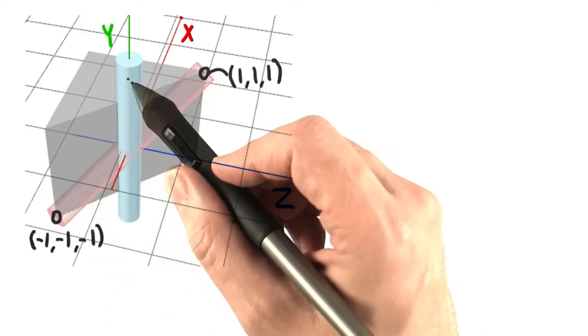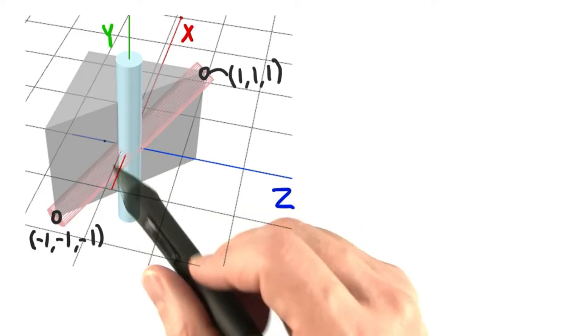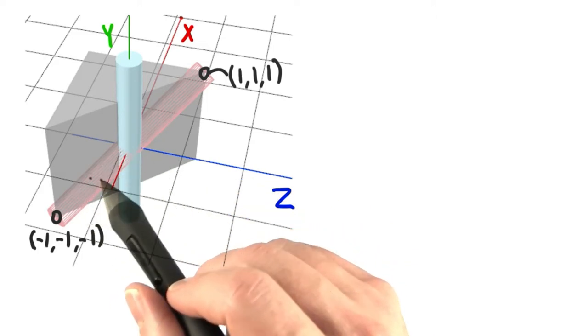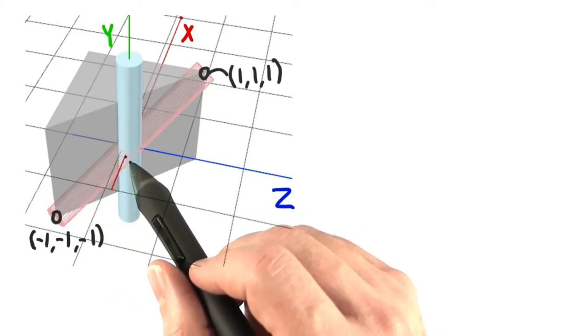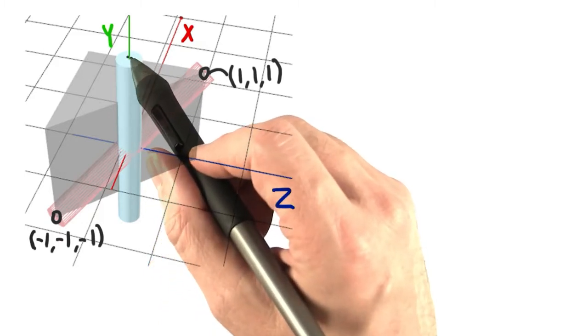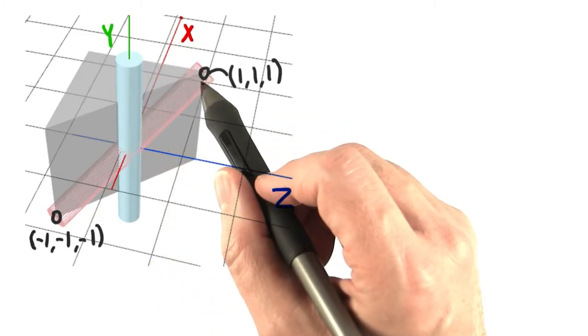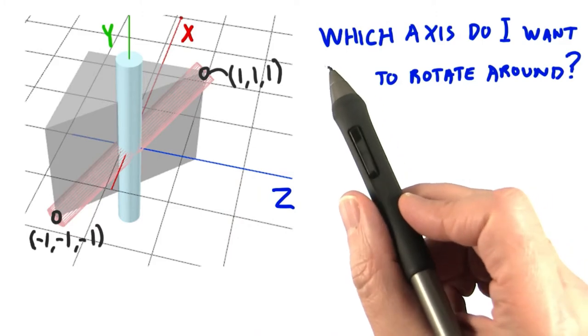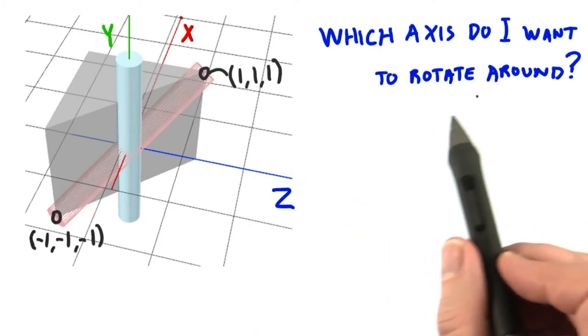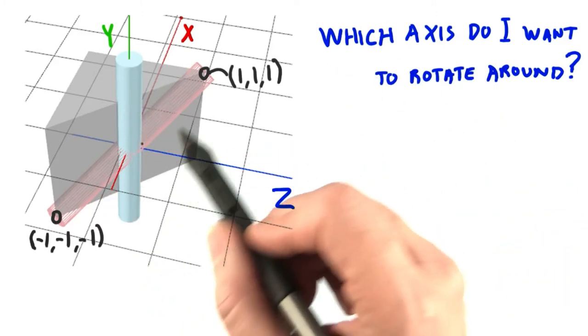Every cylinder starts pointing up along the y-axis. Step one is to figure out around which axis to rotate this vertical cylinder. I want to rotate the cylinder to the point x, y, z, all equal to 1. The question to you is, which axis do I want to rotate around in order to get this cylinder into its final position?